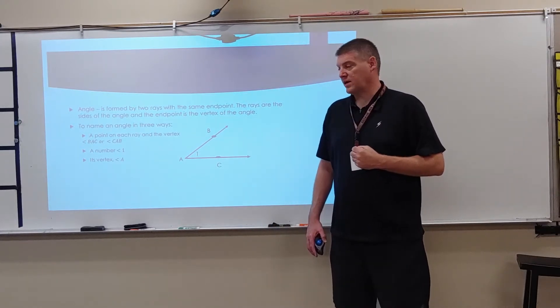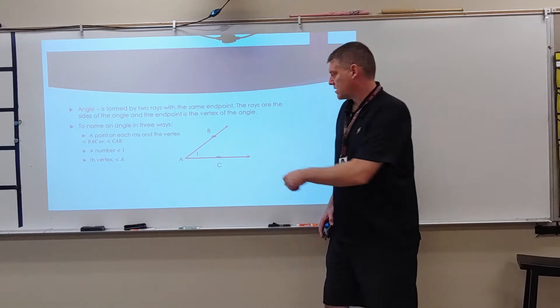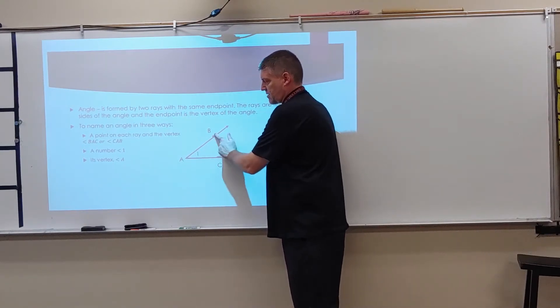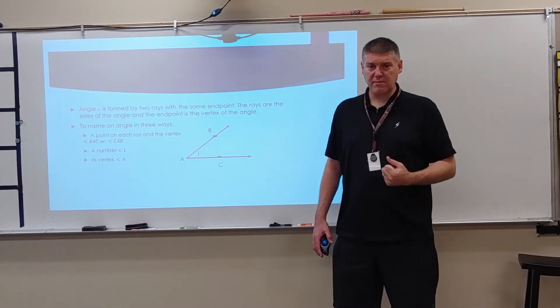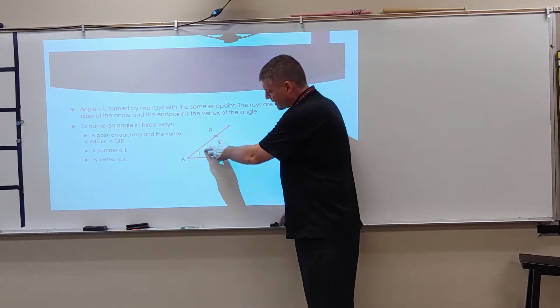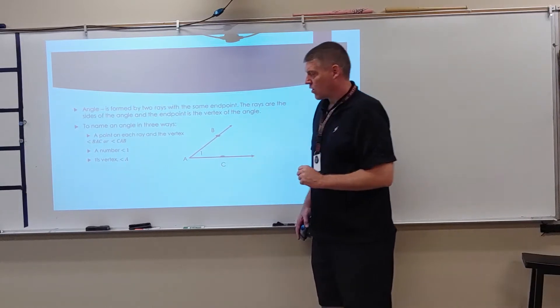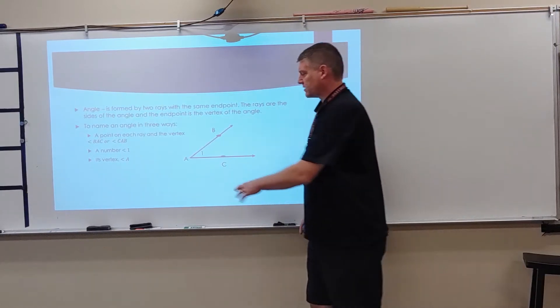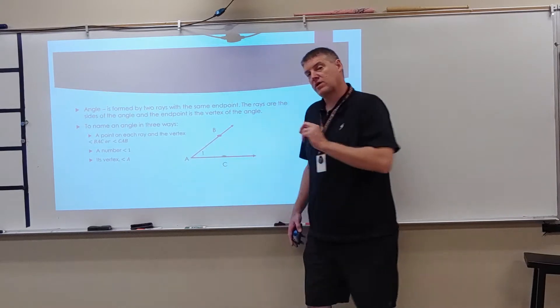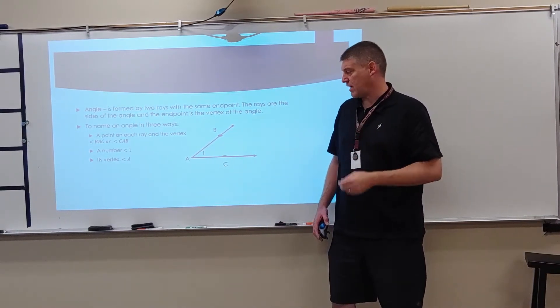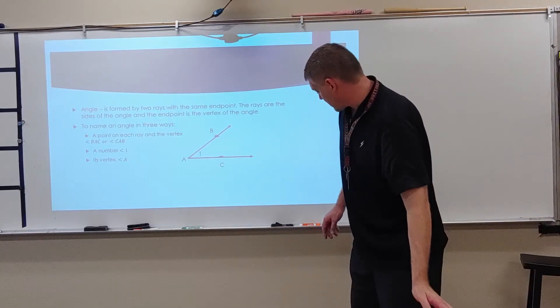A point on each ray and then the vertex. So angle BAC and angle CAB. We can name it by a number inside of it. So here we have a number, so this could be angle one. Or we can name it by its vertex, angle A. Now we can only name it by its vertex if there aren't any other angles that are associated with it.